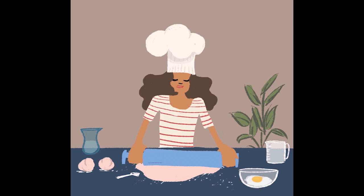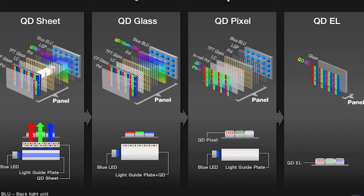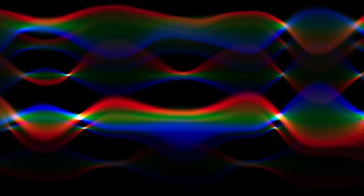But how quantum dots are like magic pixels? Let's understand this. Imagine each quantum dot is like a magic pixel on a screen and when you shine light on it or give it energy it light up with a specific color. Just like the pixel on your TV or phone screen make up the image you see.